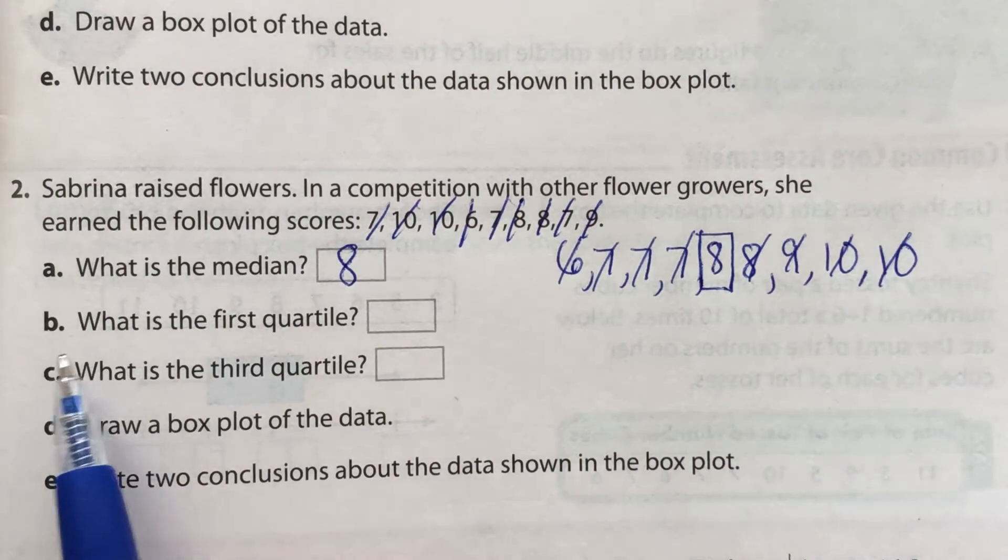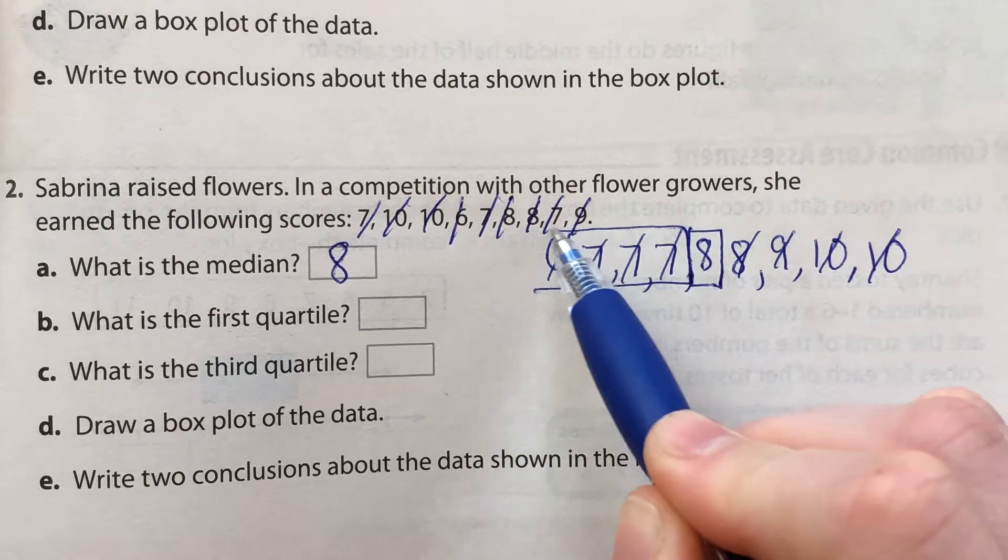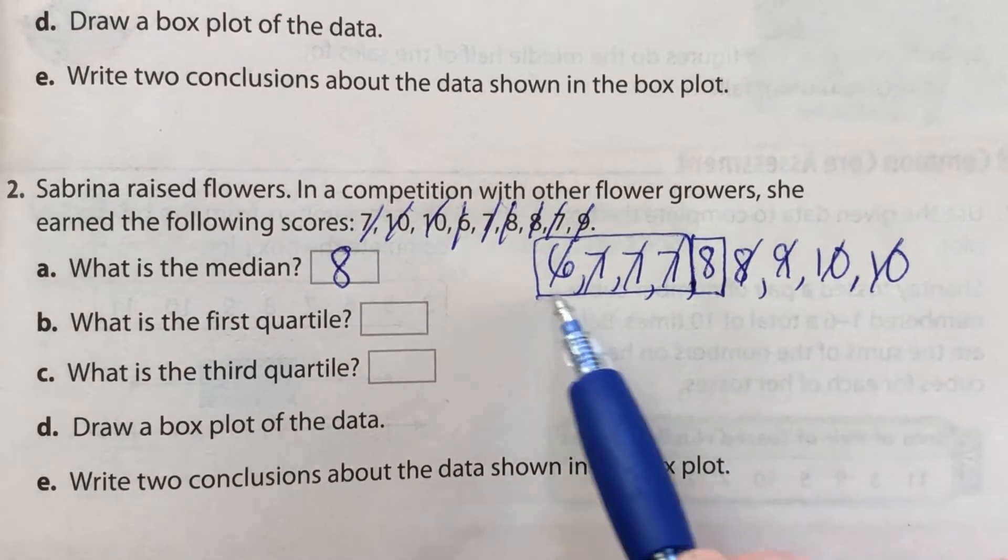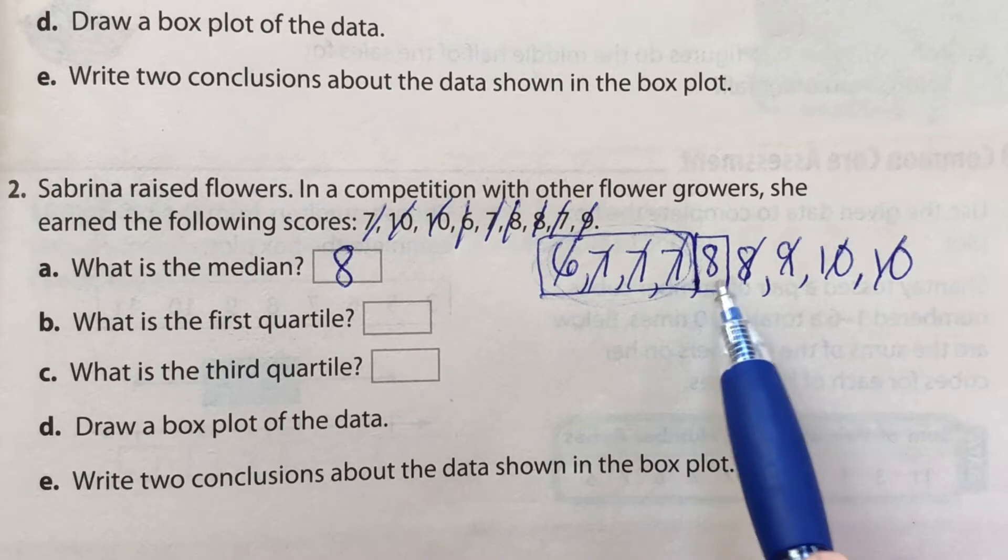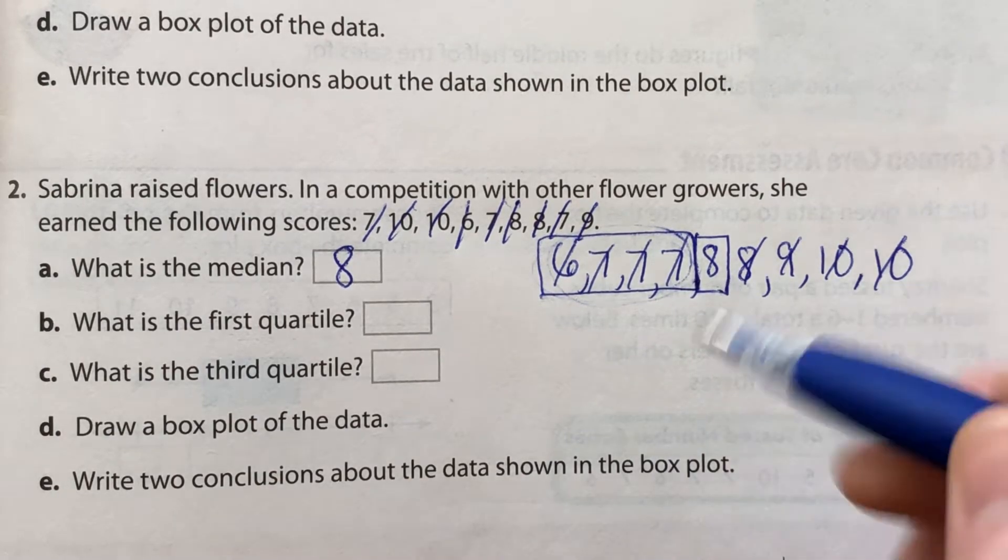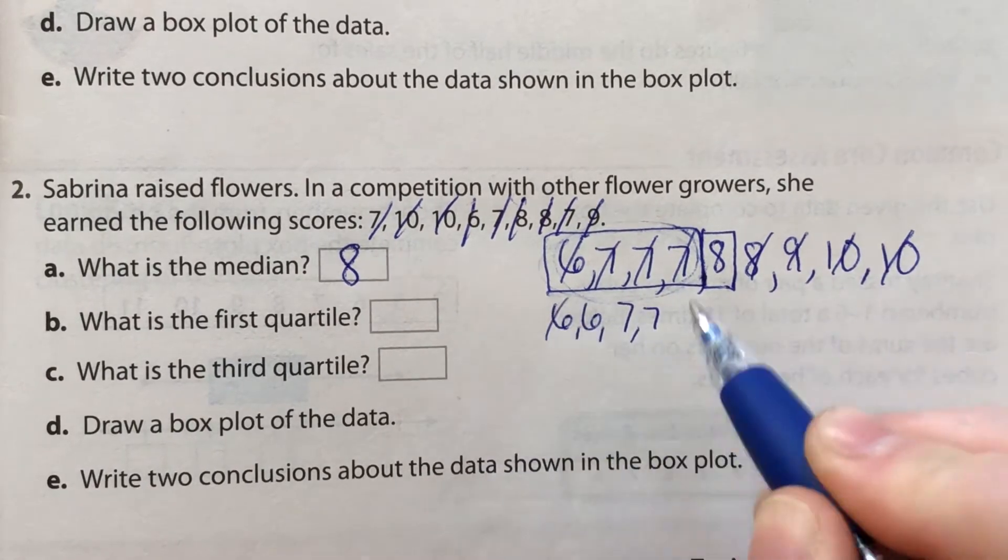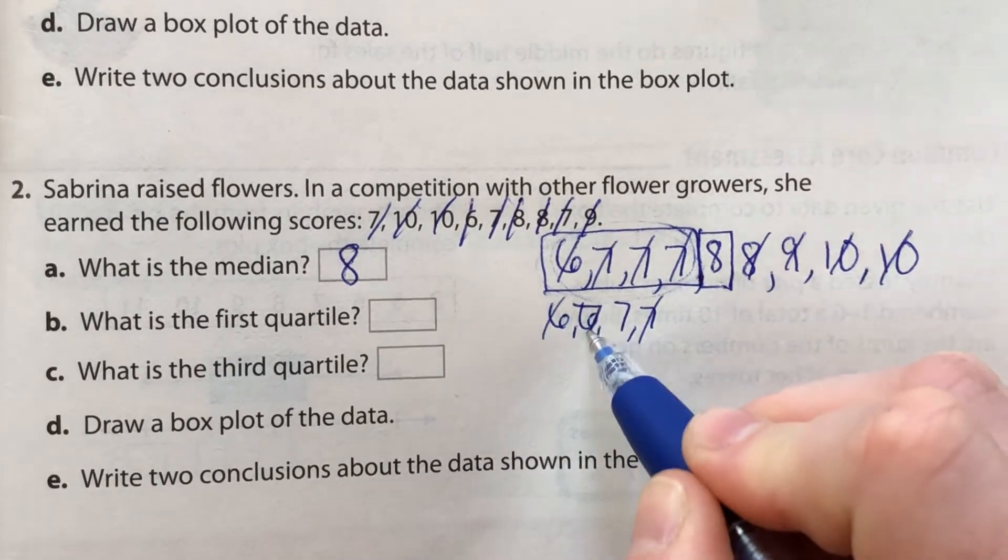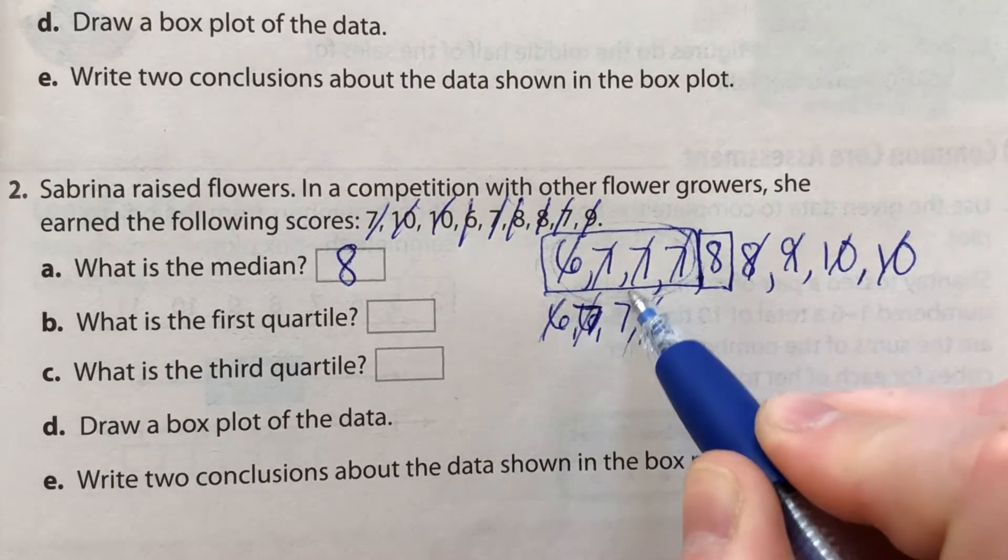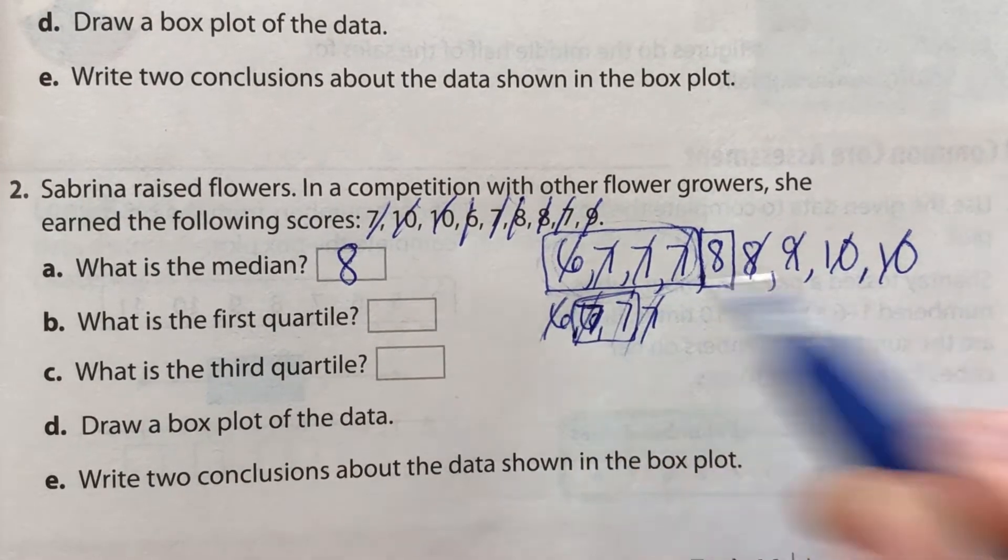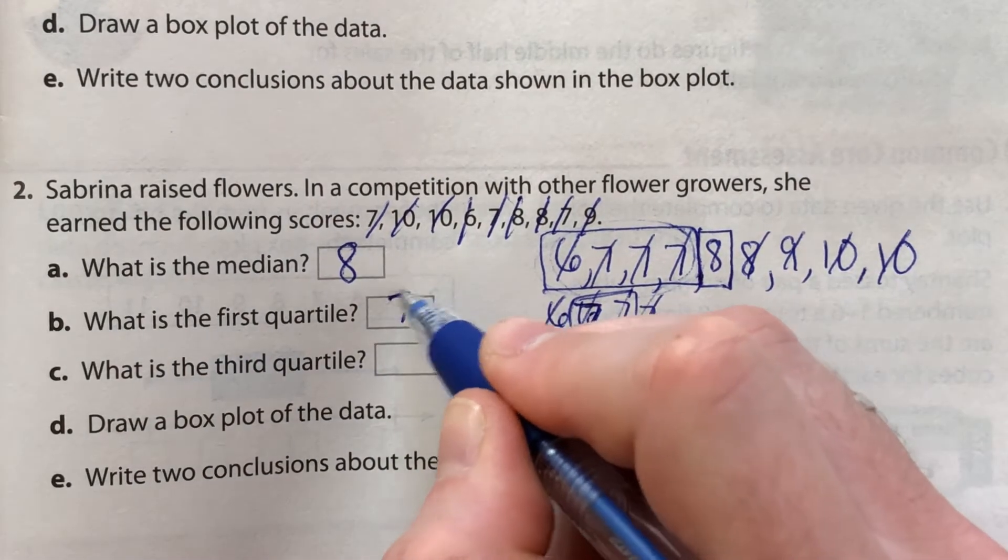Now we want to find the first quartile. So the first quartile is the median of our first half of data, the data that comes before the median. So we can rewrite those if we want. Six, seven, seven, seven. We cross them out. One, one, two, two. Well, these two are in the middle. Well, the average of two sevens is just seven. So seven is the first quartile.